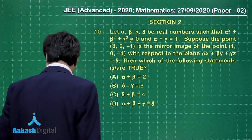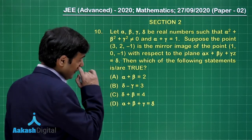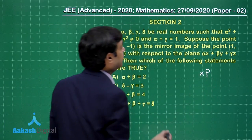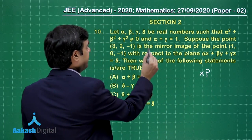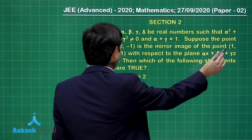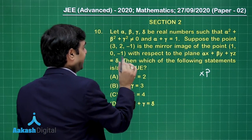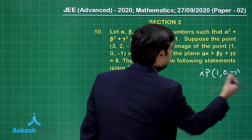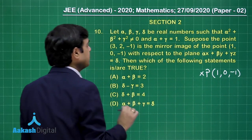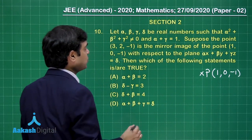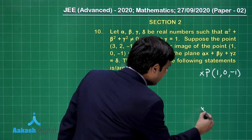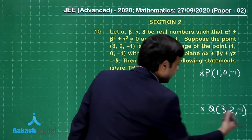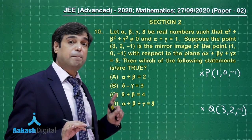Let us understand what the question is talking about. There is a point P, given as (1,0,-1), and its mirror image is Q at (3,2,-1), with respect to a plane.